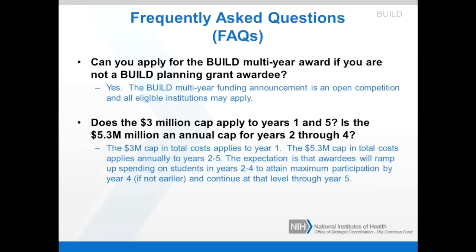Does the $3 million cap apply to year one and the $5.3 million apply annually for years two through four? The $3 million cap in total cost applies to year one. The $5.3 million cap in total cost applies annually to years two through five. The expectation is that awardees will ramp up spending on students in years two through four to attain maximum participation by year four, if not earlier, and continue at that level through year five. Keep in mind that it is not necessary to budget the entire amount — your requested budget should make sense and support your proposed program.